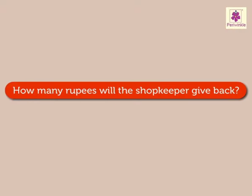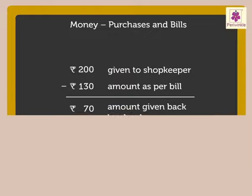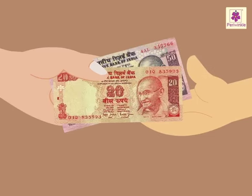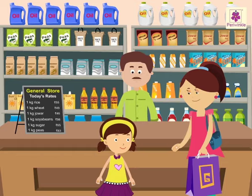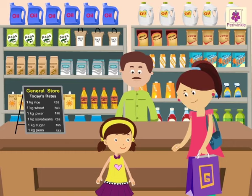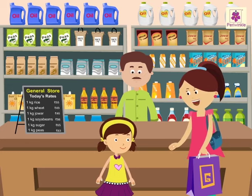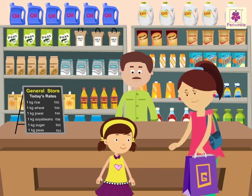How many rupees will he give back? On subtracting one hundred and thirty from two hundred, we get seventy rupees. Look, the shopkeeper is giving seventy rupees back. So Lily, it's time to go back home. Hope you enjoyed learning about purchases and bills at the store.